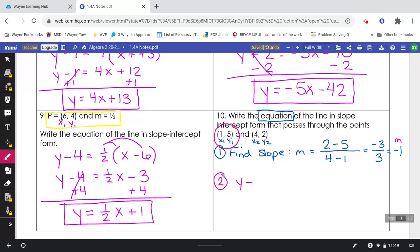y minus y1, 5, equals the slope that I found, negative 1, x minus x1, right up here from this circle. From there, distribute the negative 1, and then move the 5 to the other side, and that'll give you your final answer. I'll give you just a moment.